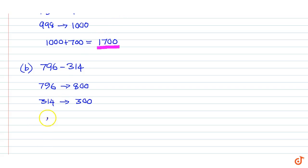Therefore 800 minus 300 equal to 500. That is our answer, part c.